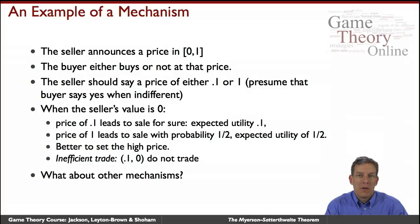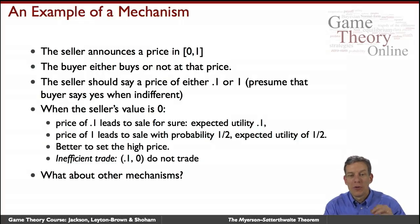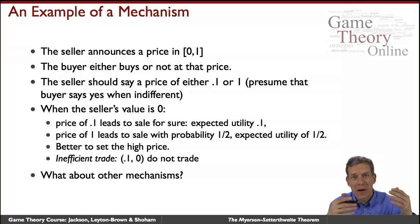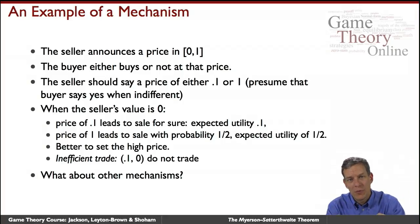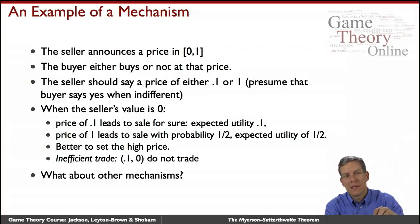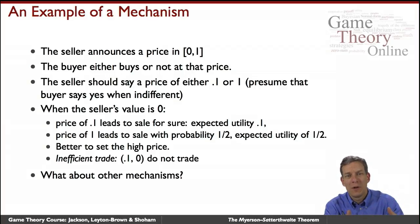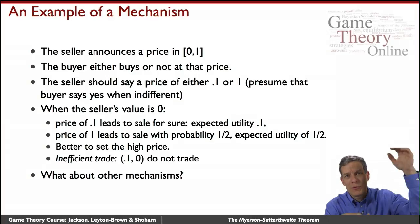What about other mechanisms? Suppose we tried to force the seller to charge a lower price. After the fact, the low-value buyer might say 'I was willing to pay 0.1, you should have sold it to me.' But if the seller sells when you tell that story, then the high-value buyer might as well tell that story too — pretending to be the low-value buyer to drive the price down to 0.1. The incentive compatibility condition makes it very difficult to get efficient trade without people pretending to be somebody else.